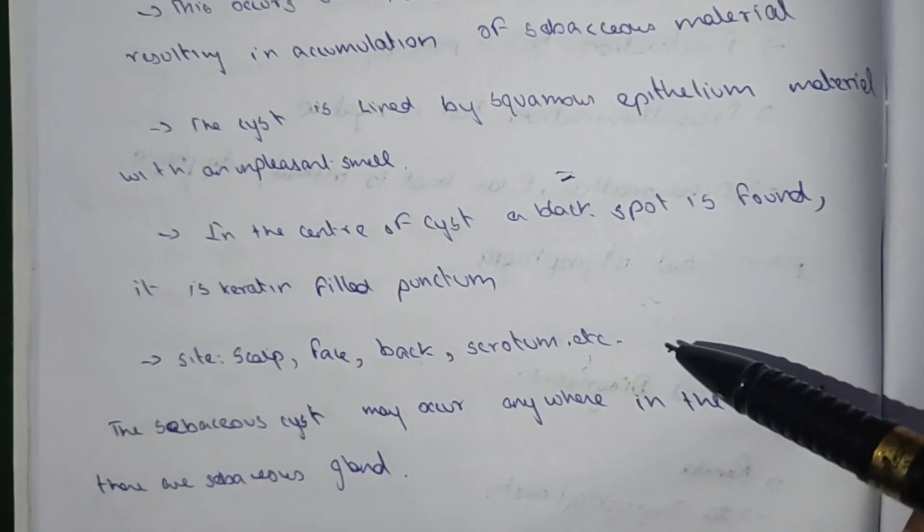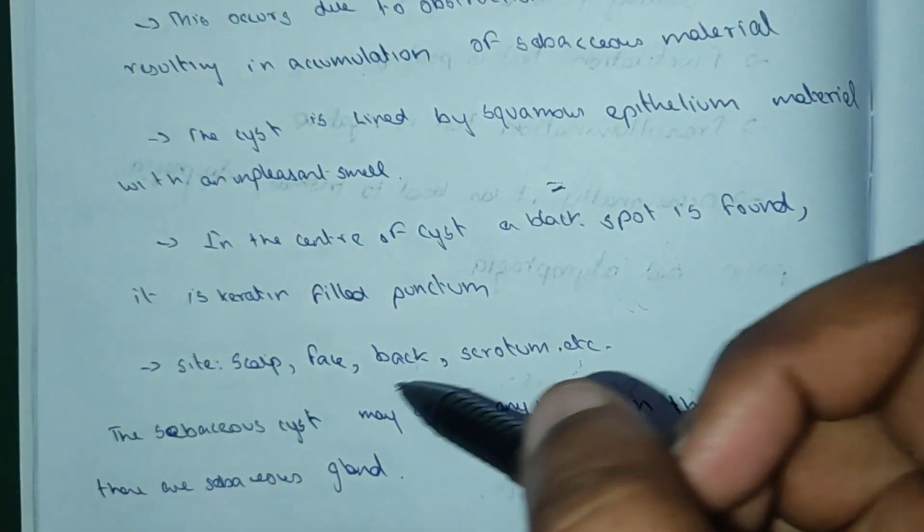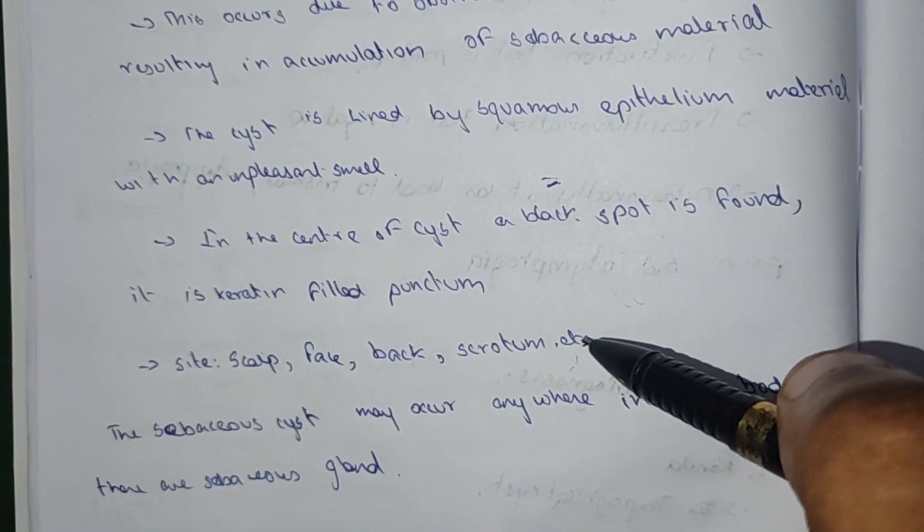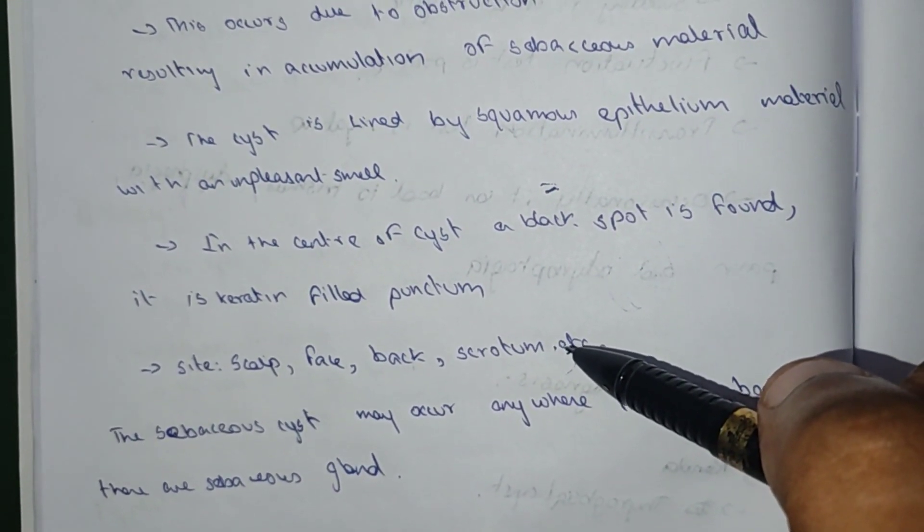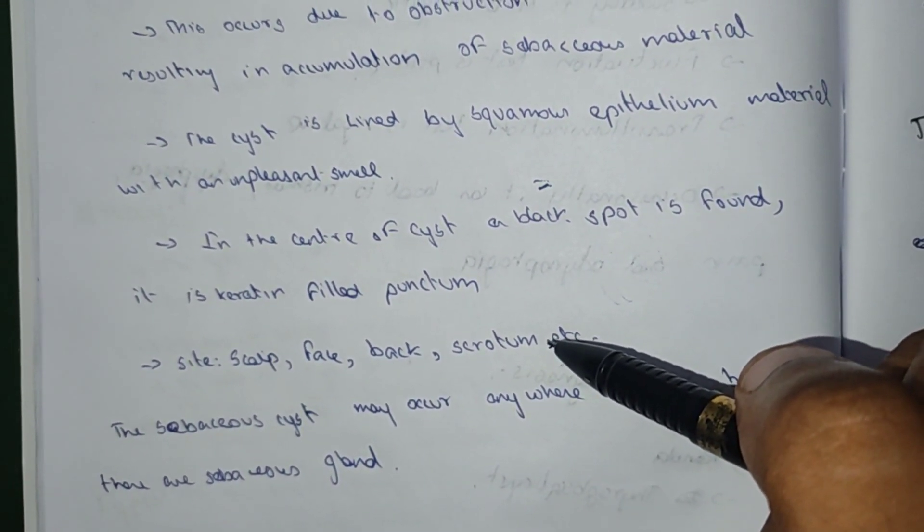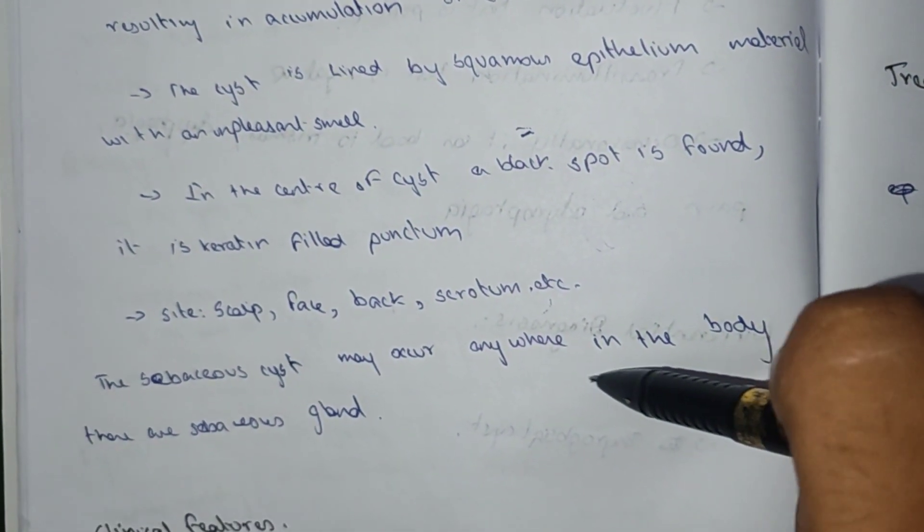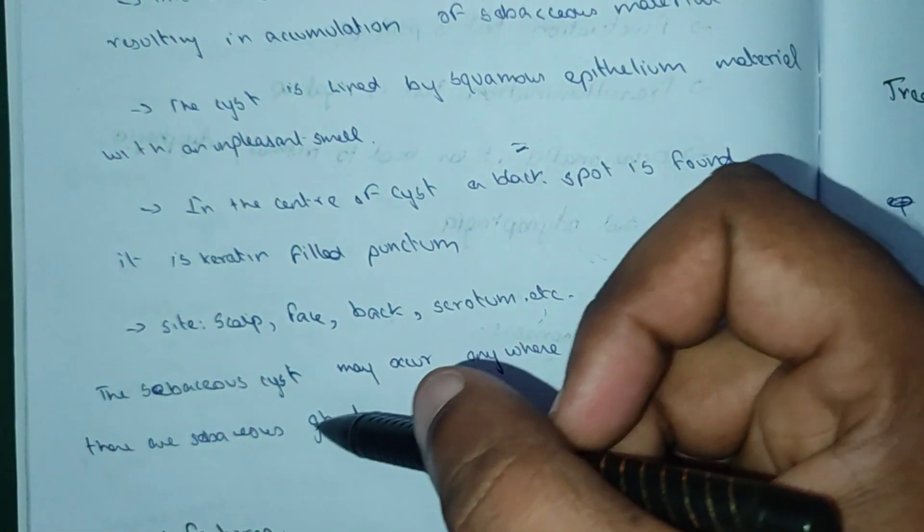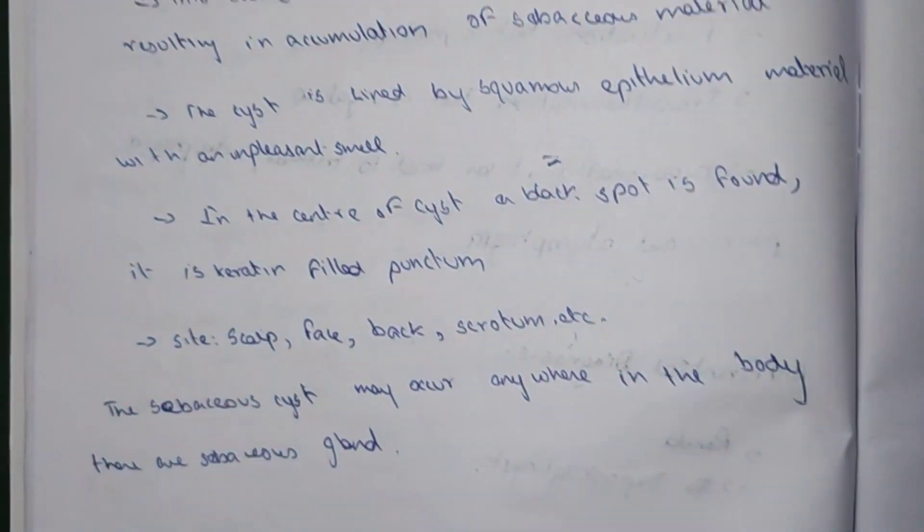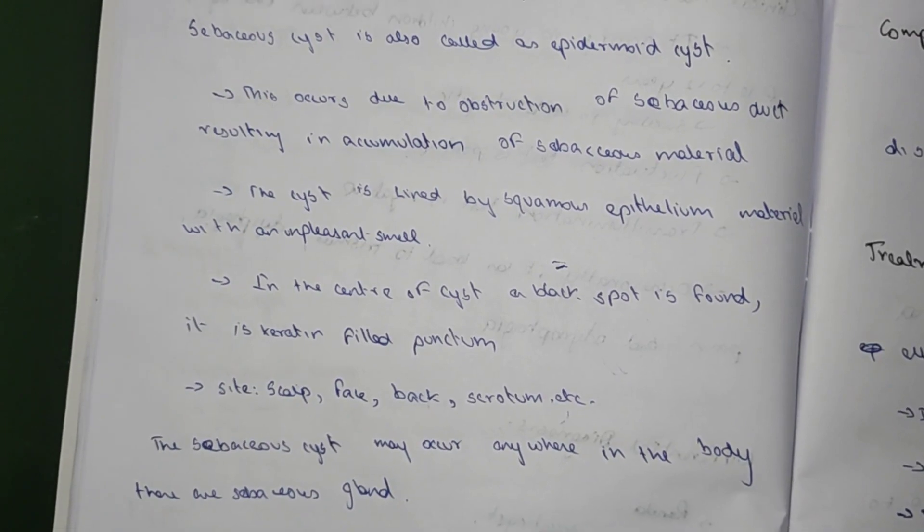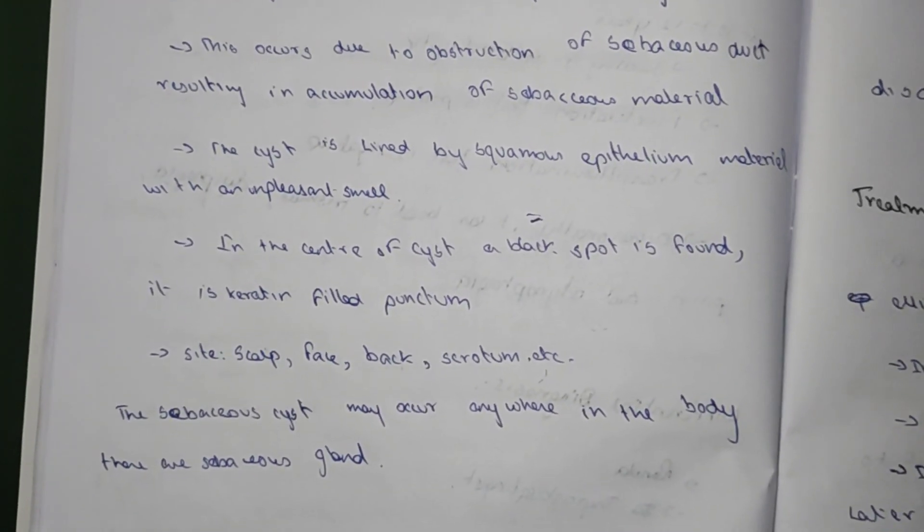Major sites where this cyst occurs are scalp, face, back and scrotum. The sebaceous cyst may occur anywhere in the body where there is sebaceous gland.